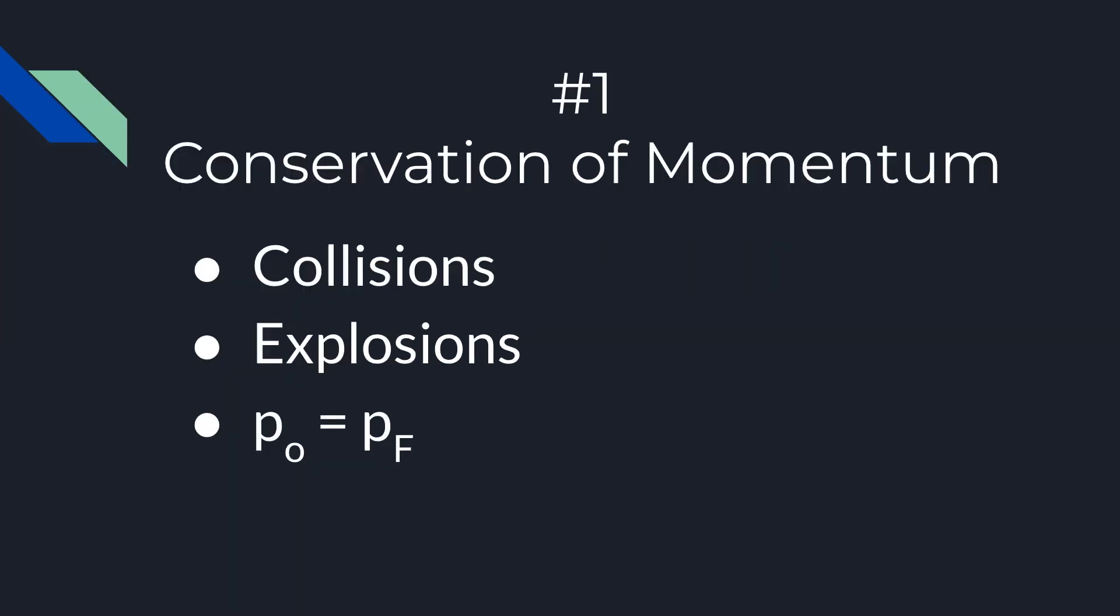Number one should be no surprise, and that's being able to solve a conservation of momentum problem, either a collision-type problem or an explosion problem. The key for this is you just look at your initial momentum, final momentum, and set them equal to each other. The absolute most common question is what would be called a completely inelastic collision. So say you have a mass m and a mass big M, and this has an initial velocity V initial, and this one is usually at rest, and they collide and stick together as one.